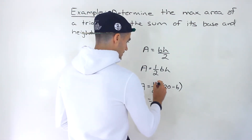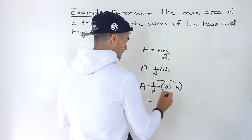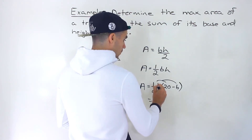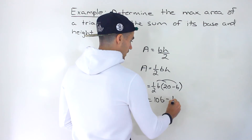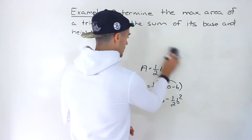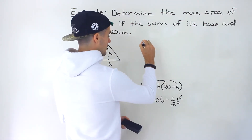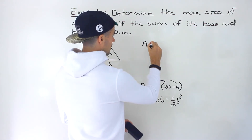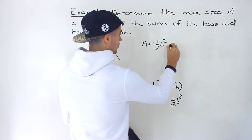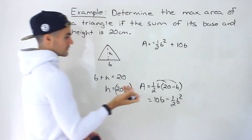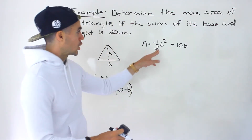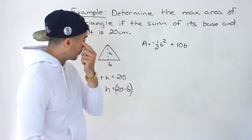Let's expand this. One half times b times (20 minus b): one half times 20b gives us 10b, and one half times b times negative b gives us negative one half b squared. So we can rewrite the area as negative one half b squared plus 10b. We now have the area as a quadratic function in terms of the base.